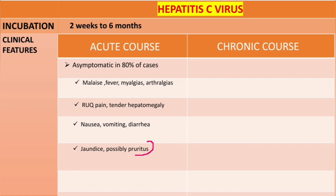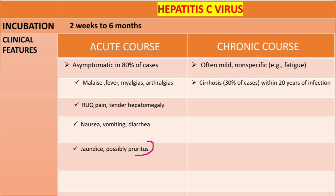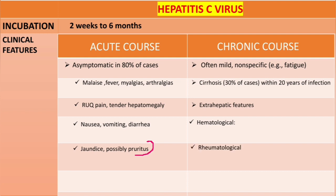Moving on to chronic infection: findings are most often mild and non-specific — for example, fatigue. Liver cirrhosis occurs in about 30% of cases within 20 years of infection. HCV also has the ability to trigger immune reactions, leading to some extra-hepatic features, including hematological, rheumatological, and dermatological manifestations.